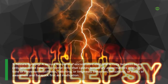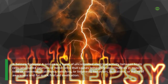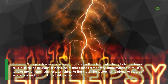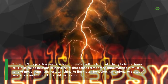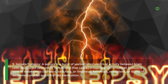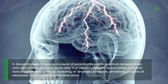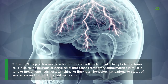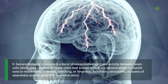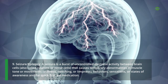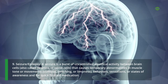9. Seizure/Epilepsy: a seizure is a burst of uncontrolled electrical activity between brain cells, also called neurons or nerve cells, that causes temporary abnormalities in muscle tone or movements — stiffness, twitching, or limpness — as well as behaviors, sensations, or states of awareness, and for quick first aid medication: